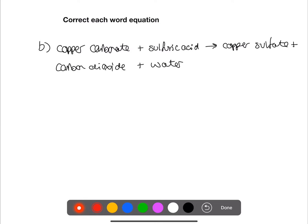Here we have a very long word equation. So we have copper carbonate plus sulfuric acid becomes copper sulfate plus carbon dioxide plus water. However, the carbon dioxide and water are on the left hand side of the arrow. They should be over here.